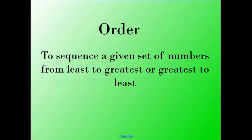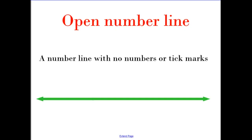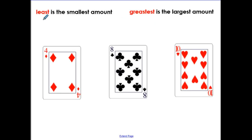Let's go over the content vocabulary words. Order: to sequence a given set of numbers from least to greatest or greatest to least. Open number line: a number line with no numbers or tick marks. Least is the smallest amount. Greatest is the largest amount.